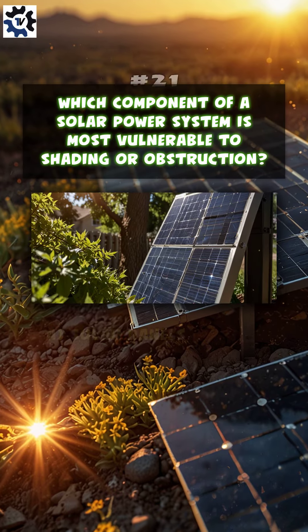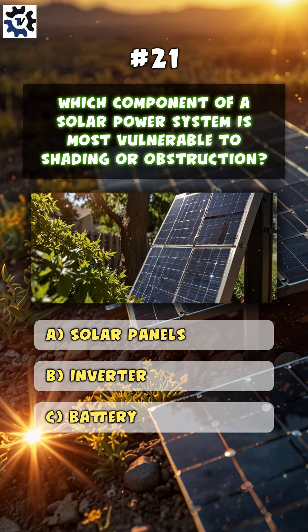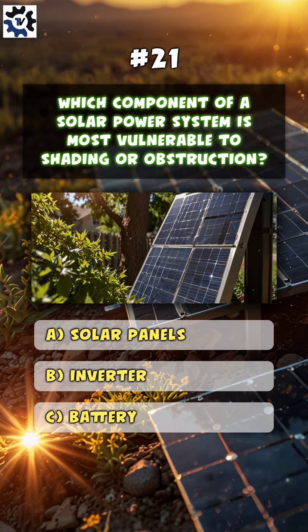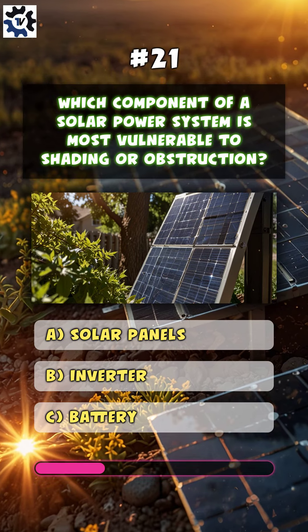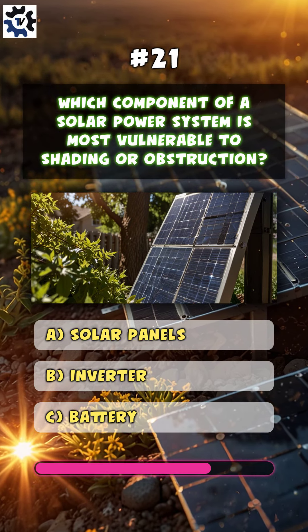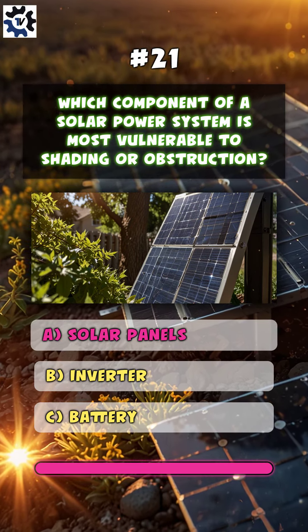Which component of a solar power system is most vulnerable to shading or obstruction? A. Solar panels.